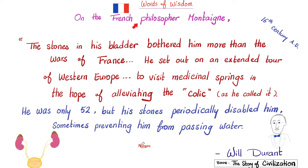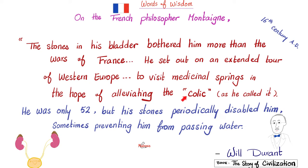On the French philosopher Montaigne, Will Durant writes that he set out on an extended tour of Western Europe to visit medicinal springs in the hope of alleviating the colic, as he called it. Indeed, we still call it renal colic to this day.